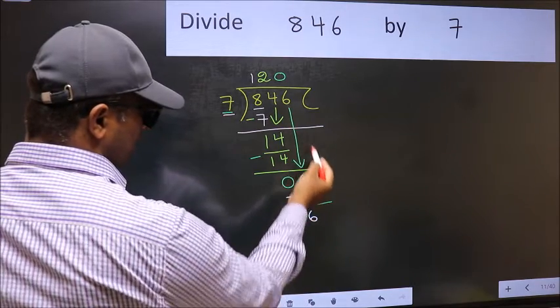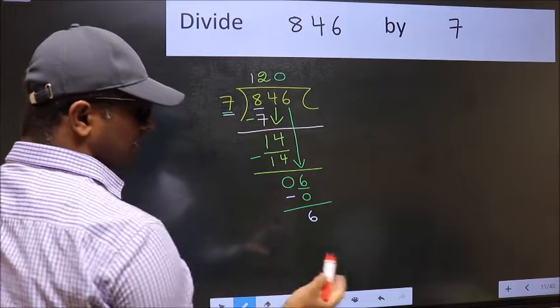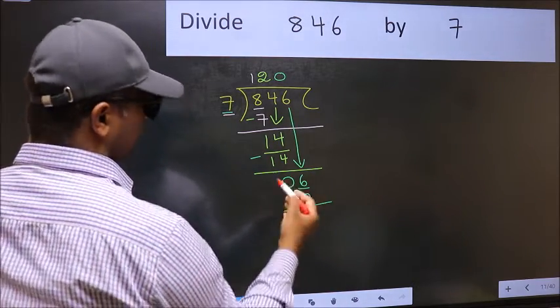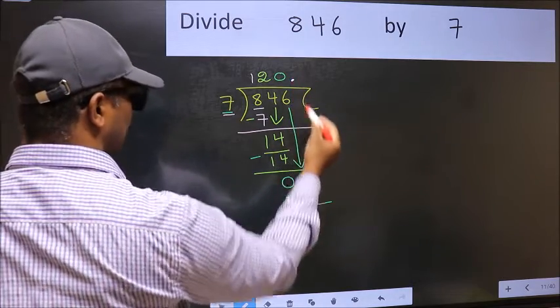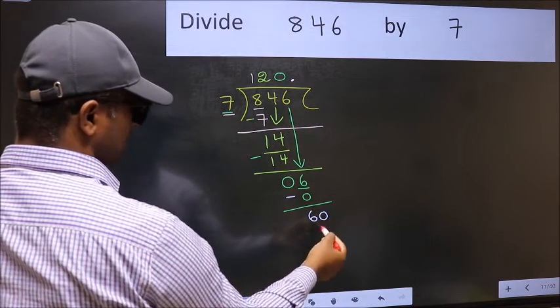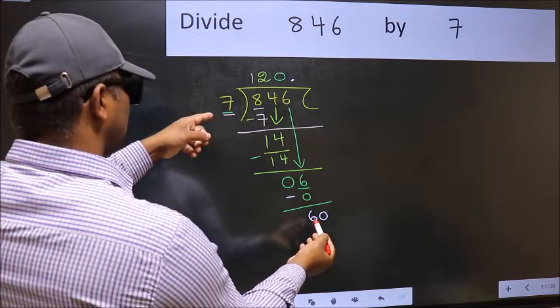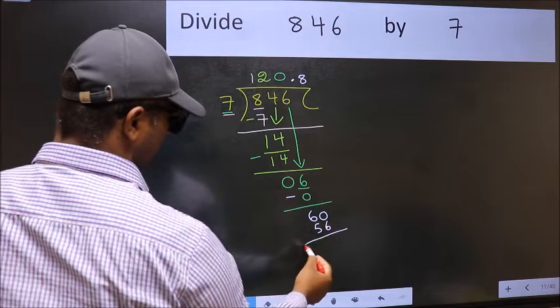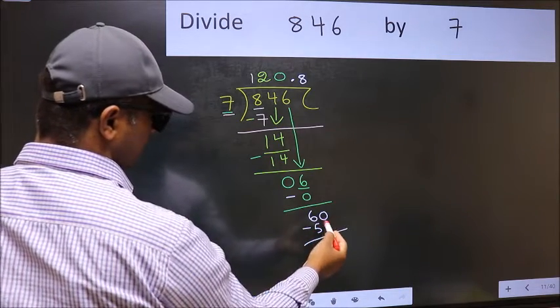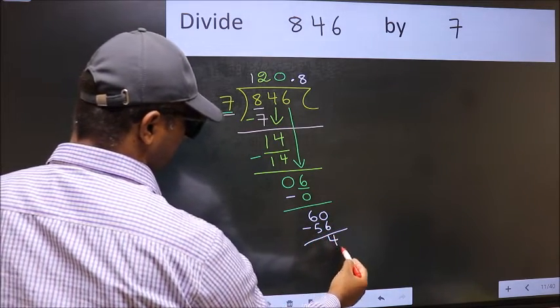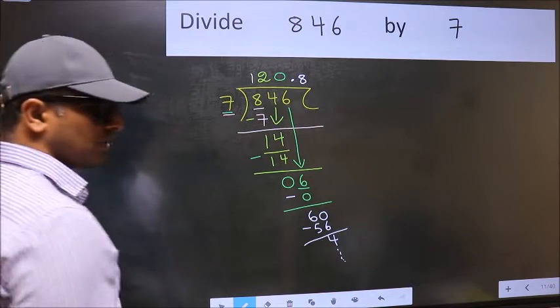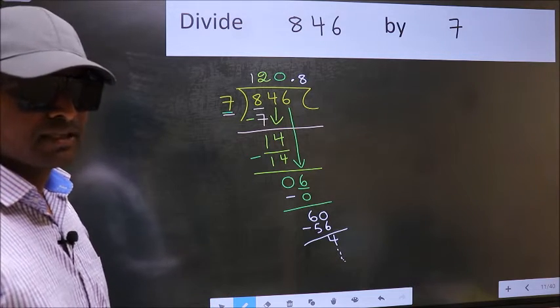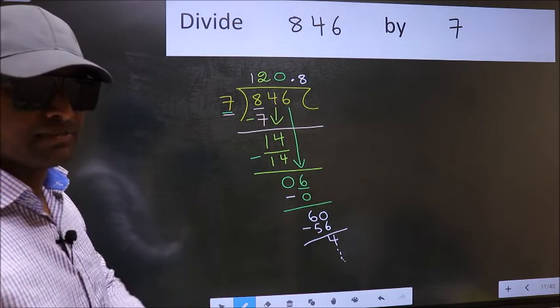Over here, we did not bring any number down. And 6 is smaller than 7. So now you can put dot and take 0. So 60. A number close to 60 in 7 table is 7, 8, 56. Now you should subtract. 60 minus 56, 4. And continue the division. I am not doing that. Did you understand where the mistake happens? You should not do that mistake.